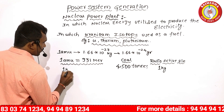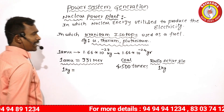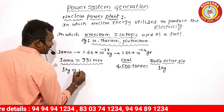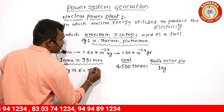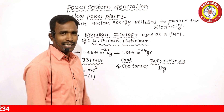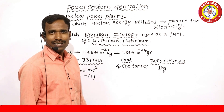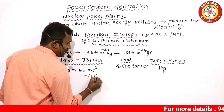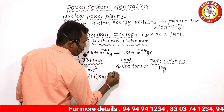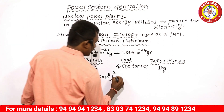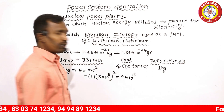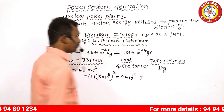If 1 kg of radioactive uranium material is used, what energy is produced? According to Einstein, the energy produced E is equal to mc². Here m is mass = 1 kg, and c is the velocity of light = 3 × 10⁸ m/s. So E = 1 × (3 × 10⁸)² = 9 × 10¹⁶ joules of energy produced.